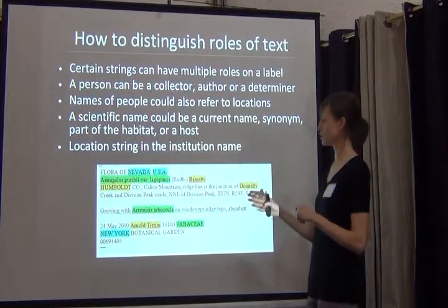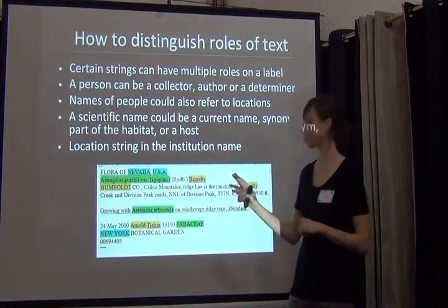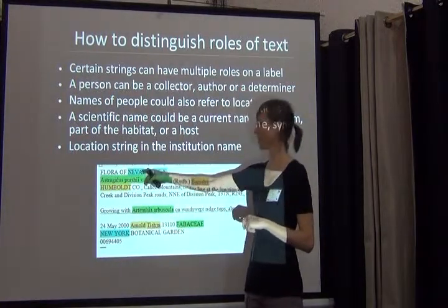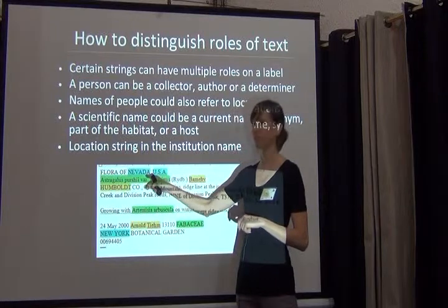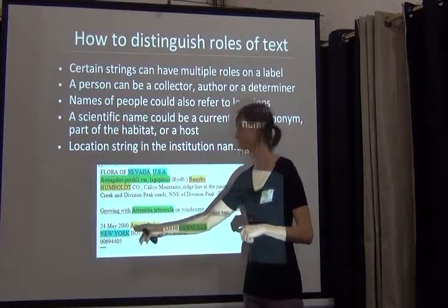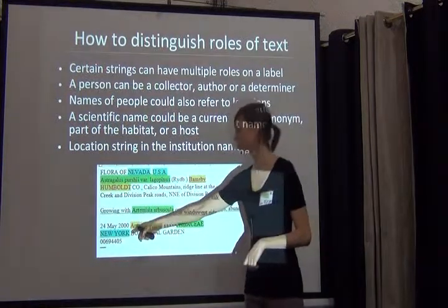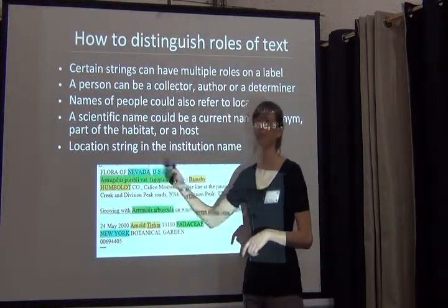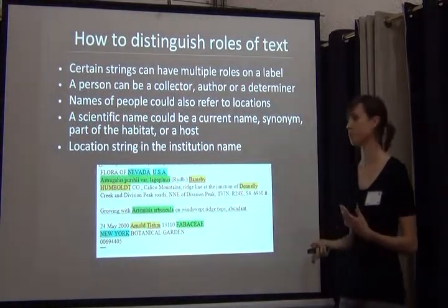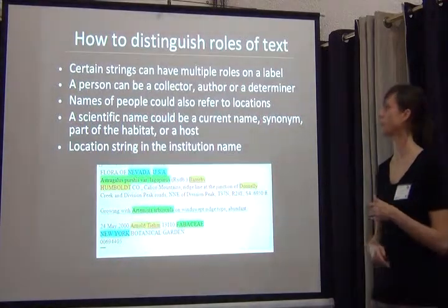And finally, location strings. This is a collection in the United States and two states are listed: Nevada and New York. But this was actually collected in the state of Nevada — it's a New York Botanical Garden label. So if you're running OCR against an authority file of place names, you're going to pull out New York and Nevada as states, but only Nevada is useful as the collection state. These are a lot of things to think about when dealing with OCR output.